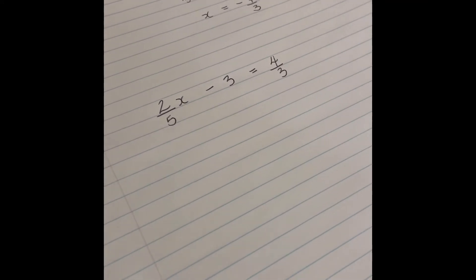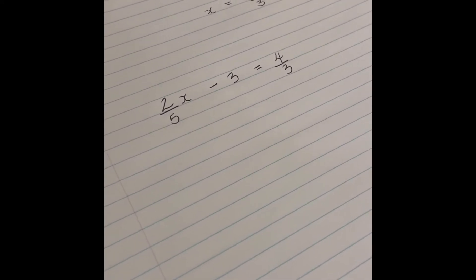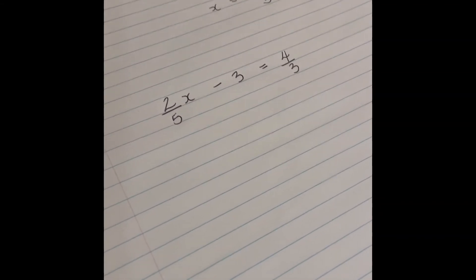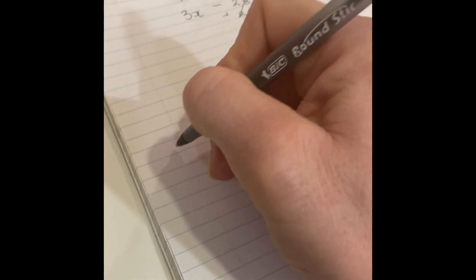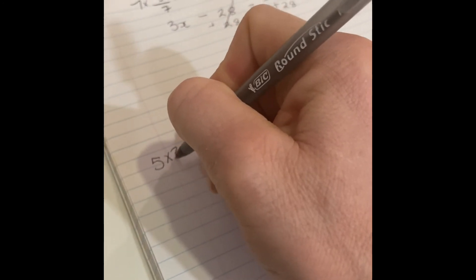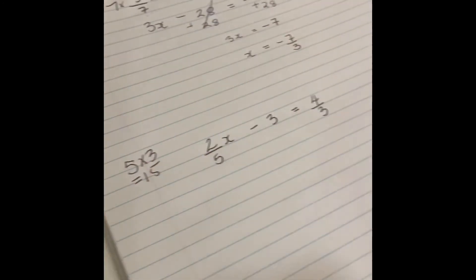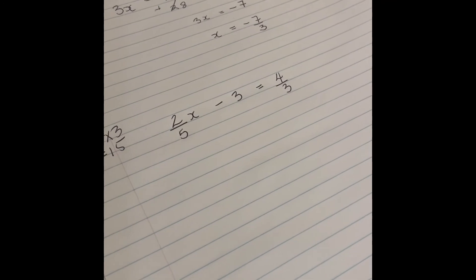What you can do is you can multiply the 5 times the 3, so 5 times 3 is 15. I'm going to take the 5 times the 3 and I get 15.